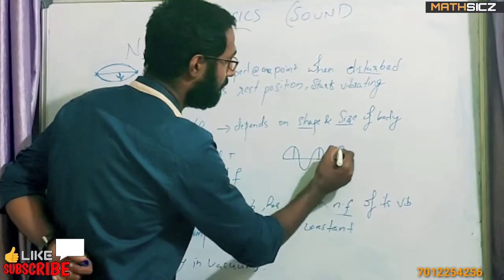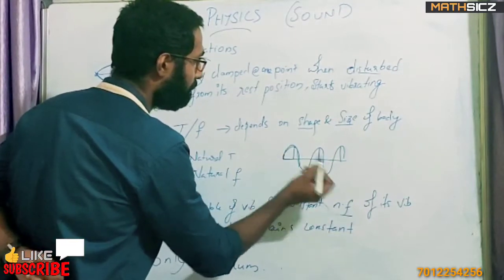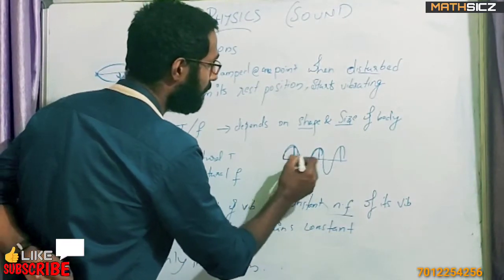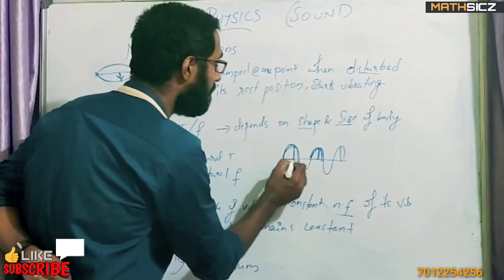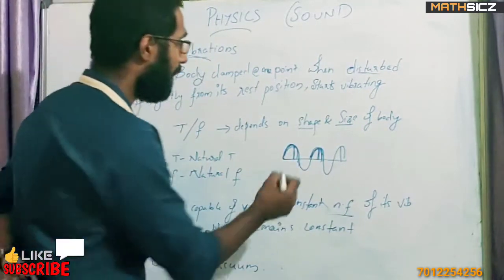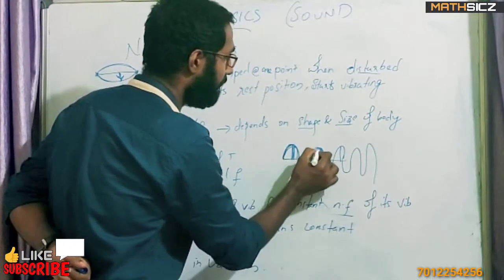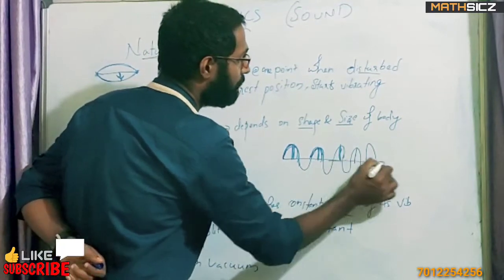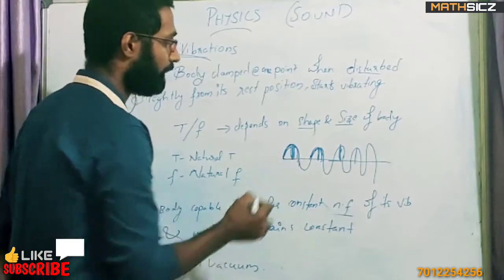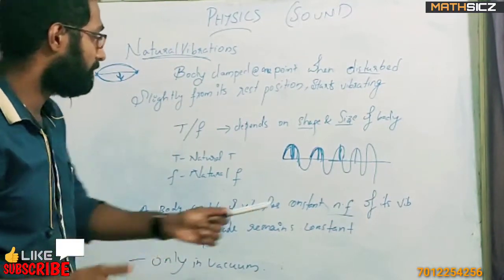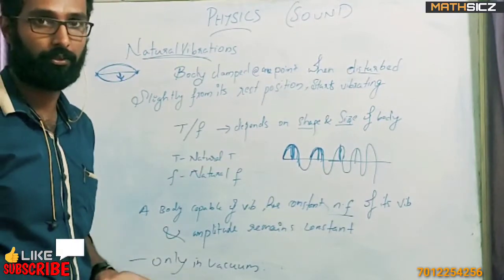The amplitude remains constant. In any given time, the amplitude remains constant. In this amplitude, it must be a fixed amplitude. It is constant amplitude — it remains constant. At any moment, the amplitude is constant. It has a constant natural frequency of its vibration, and the amplitude remains constant. There is a constant natural frequency for a particular body.